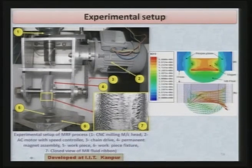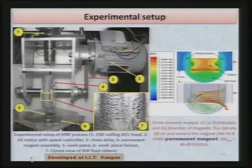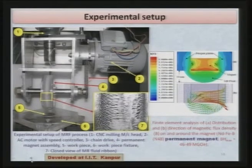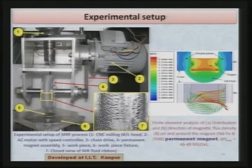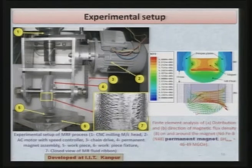This shows the finite element analysis of distribution and direction of magnetic flux density on and around the permanent magnets. You can clearly see the areas where very large magnetic field exists and comparatively small magnetic field exists, and this analysis has been quite useful in developing this particular process.